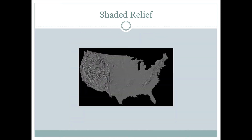This is a shaded relief map of the entire United States. It was done when one of the first good digital elevation models for the continental United States was put together, and it gives us a good idea of where all of the various mountains and landforms are across the country.